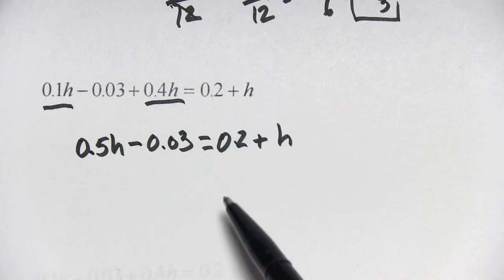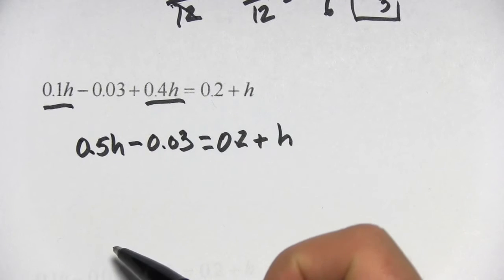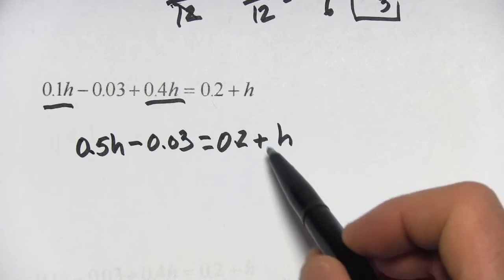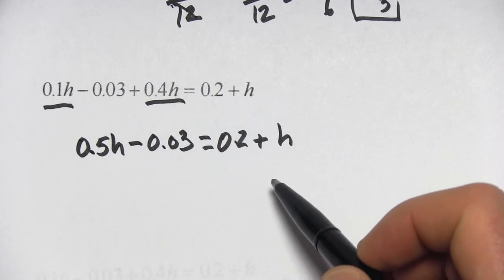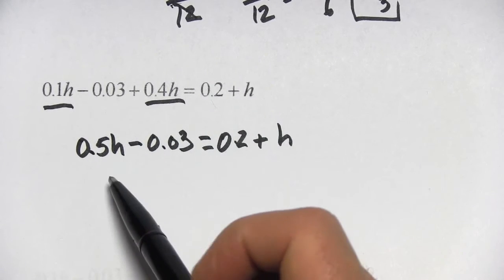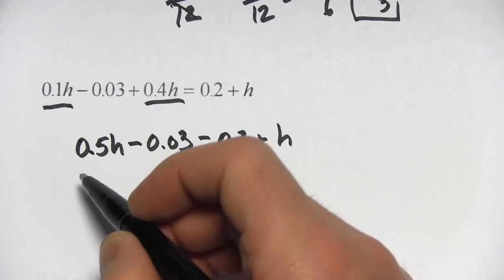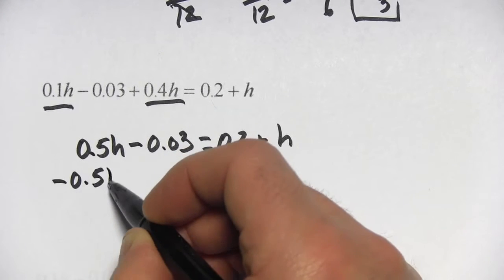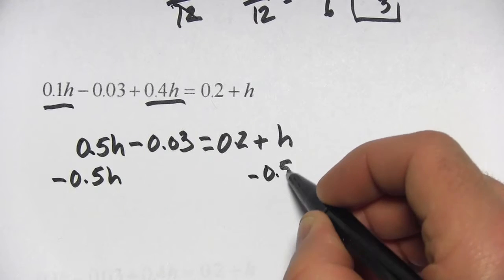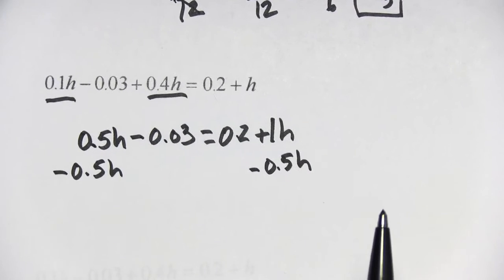The next step, just like in the last one, we want to get h on just one side of the equation. I could do that by either getting rid of the 0.5h by subtracting 0.5h, or I could get rid of the whole h by subtracting 1h. I want to avoid negative numbers, so I'm just going to get rid of this 0.5h. So I'm going to subtract 0.5h. If I do that to this side, I have to do it to this side. And I'm just going to write in the 1 here, so I don't forget.